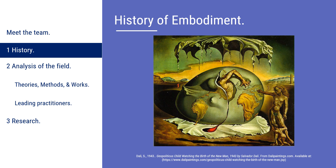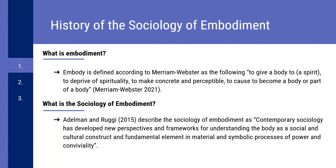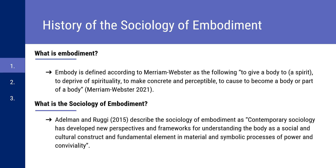Here we can see a painting by Salvador Dali, and I think it's an interesting representation of embodiment — of the body and how it moves in the world or remains static in the world. We're going to begin on the history of embodiment. When thinking about the history of embodiment and the sociology of embodiment, we have to first define what embodiment is and think about why sociology for embodiment.